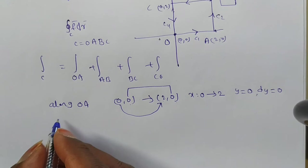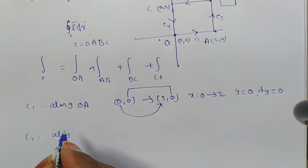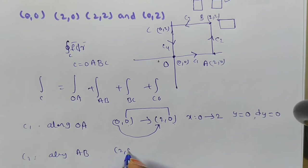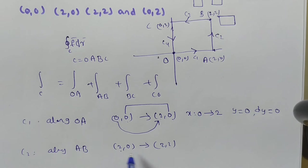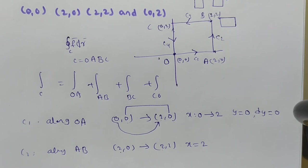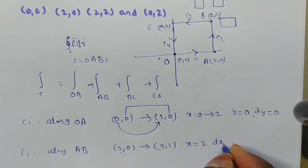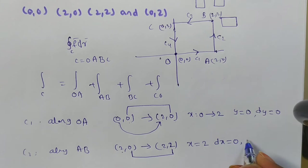Along C2 (A to B), the points go from (2,0) to (2,2). X = 2 at both ends, so X is constant and DX = 0. Y is moving from 0 to 2, so the Y limits are 0 to 2.